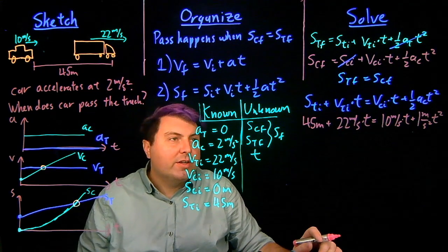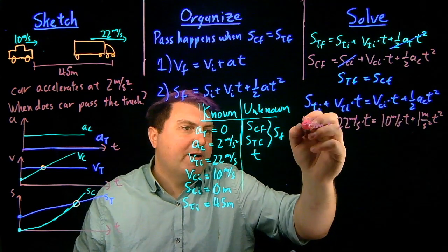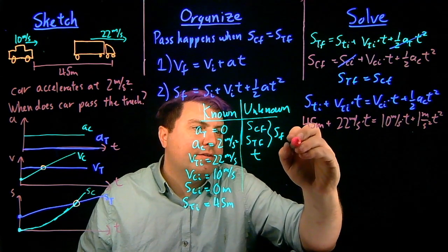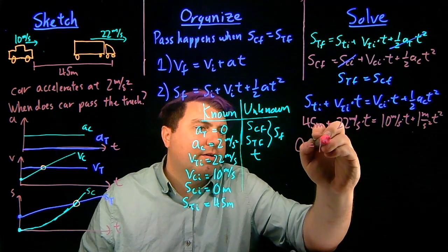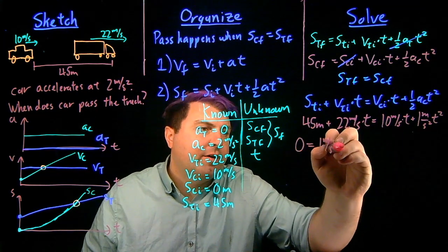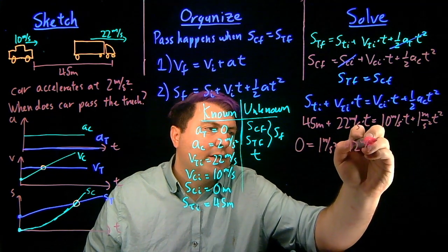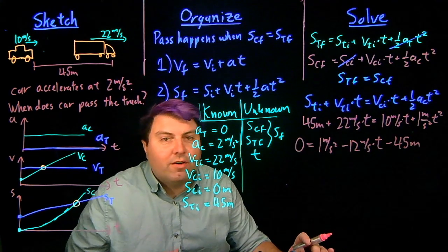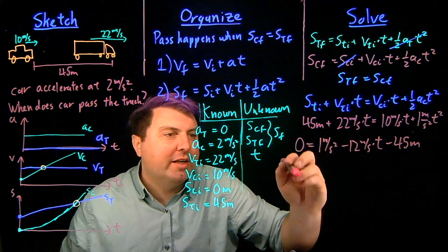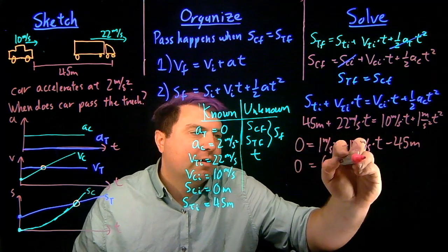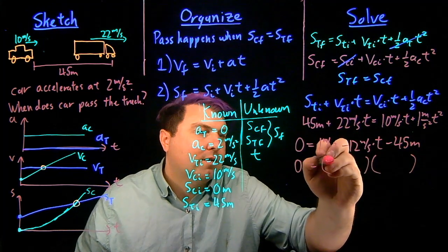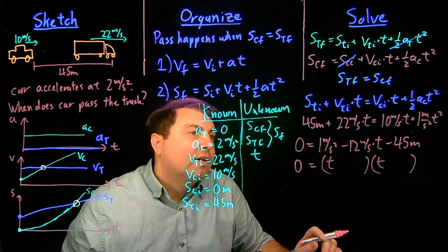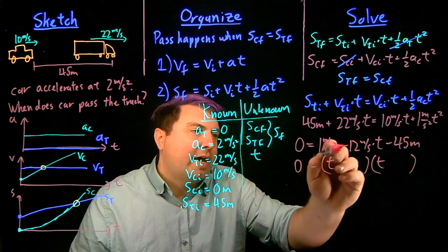So if I want to solve this, I've got T to the second power, T to the first power, T to the zeroth power. I can move everything over to over here. So I have 0. I have 1 meter per second squared. 10 minus 22 is negative 12 meters per second times time. 45 over here is negative 45 meters. So I don't have enough space to really do all of this, but I can instead just do some factoring out.